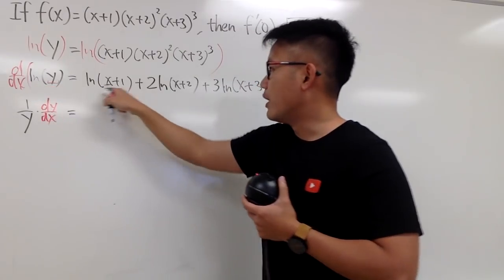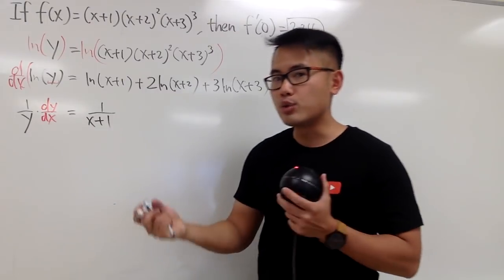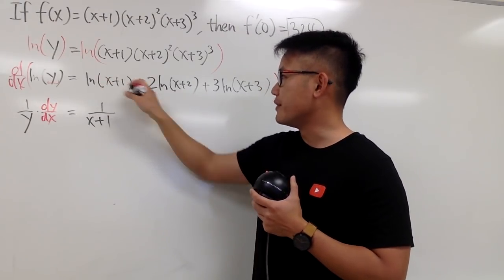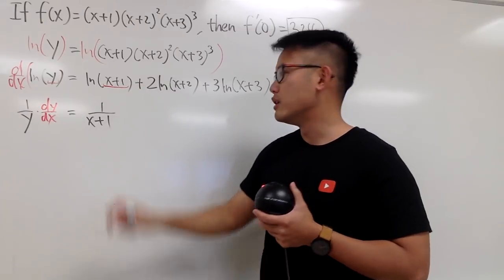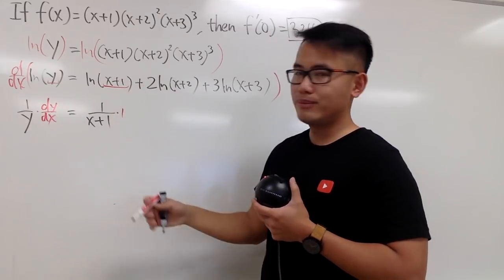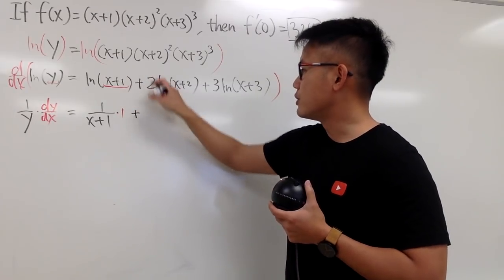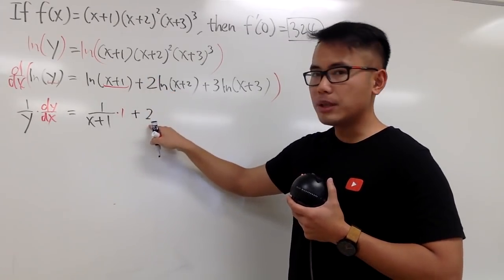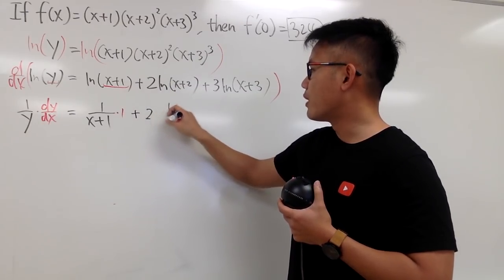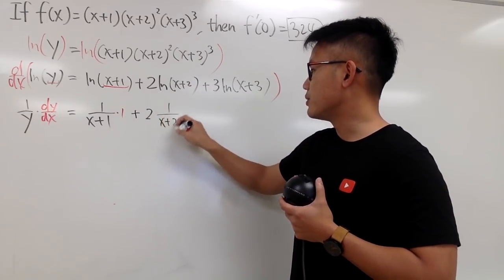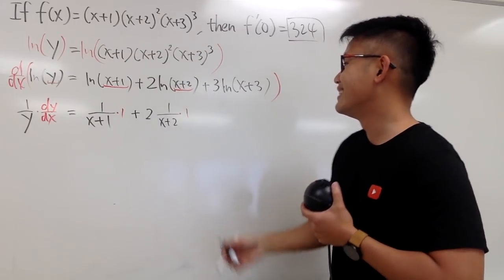So, derivative of ln(x+1) is just 1/(x+1). And the chain rule says we have to multiply by the derivative inside, but the derivative of x+1 is just 1. So, we are just multiplying by 1, which doesn't really matter. Next, we add it with 2, right? We keep the constant multiple, and then multiply by the derivative of this, which is just 1/(x+2). And the derivative of the inside is, once again, just 1.